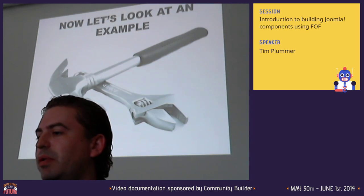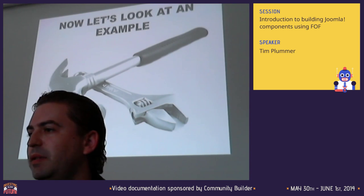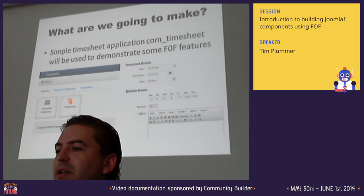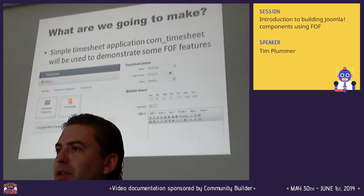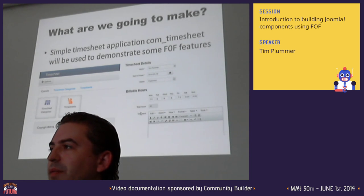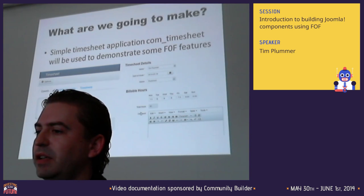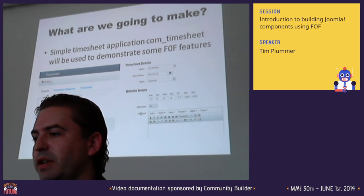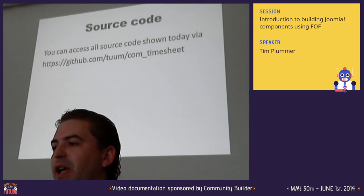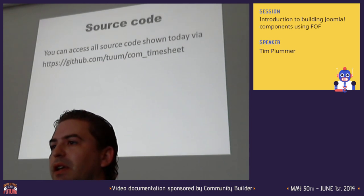We're going to look at an example to see some FOF features demonstrated. The example I've created is a simple timesheet application - a basic form where you put in the person's name, the week you're doing the timesheet for, and how many hours they worked each day. It does a little calculation, then you can save, delete, and edit the record. You can see all the source code on GitHub, and these slides will be available online too.